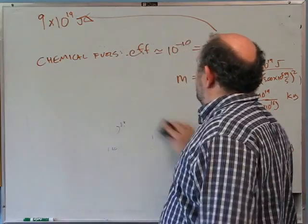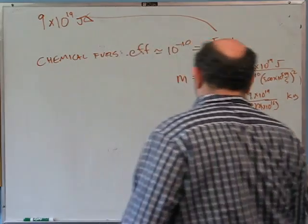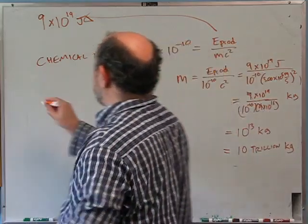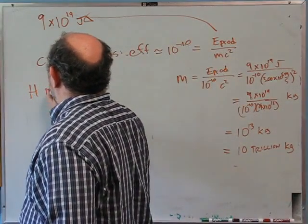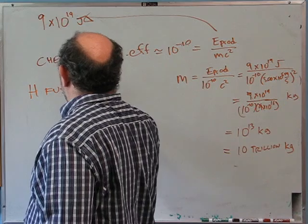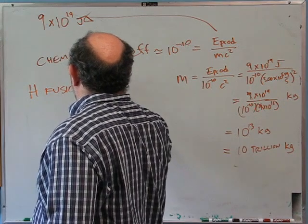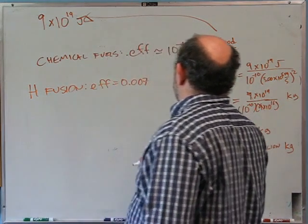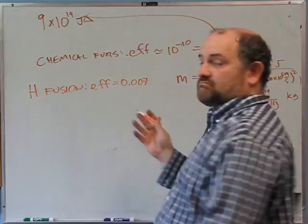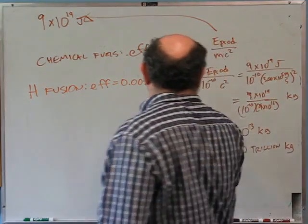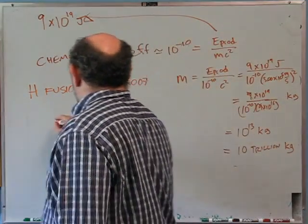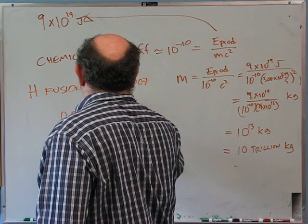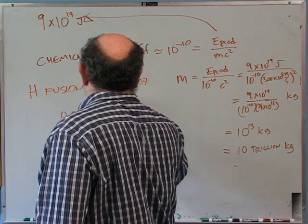What we really want to compare is nuclear fuels — specifically hydrogen fusion. For H fusion, the efficiency is 0.007 (about 0.7%). So efficiency = E_produced ÷ (m·c²), meaning mass = E_produced ÷ (0.007 × c²).